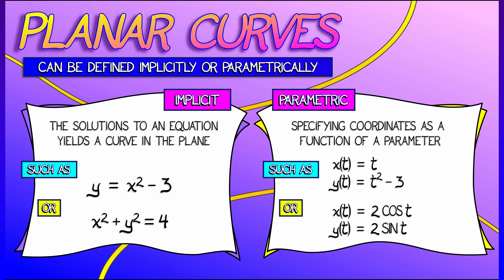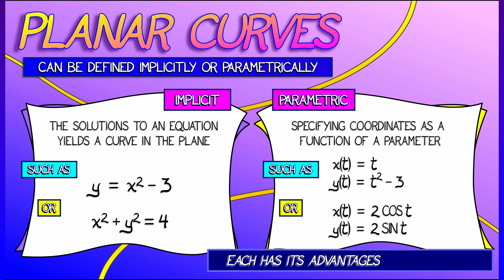Now, each of these two ways of doing things, implicitly, parametrically, have advantages, disadvantages.